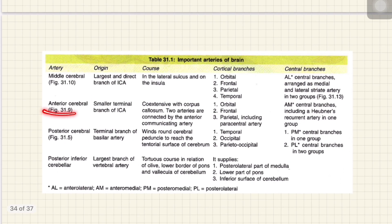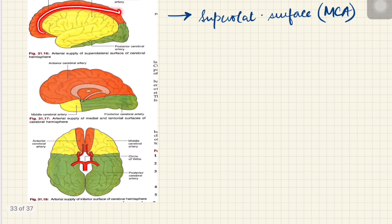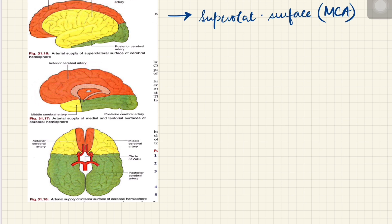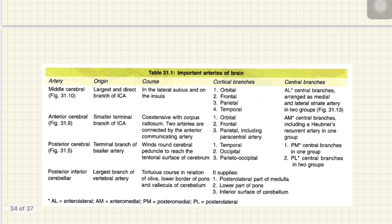The anterior cerebral artery is the smaller terminal branch of the internal carotid artery. It supplies the orbital, frontal, and parietal parts. You can see the parietal part, the frontal part, and the orbital part on the diagram. The anterior cerebral artery is the chief artery on the medial surface of the brain — this is the key takeaway to remember.